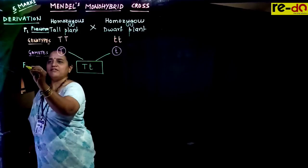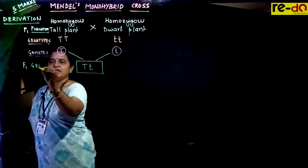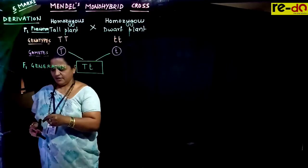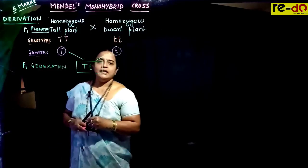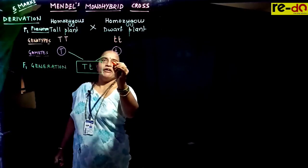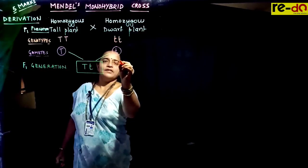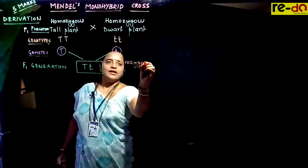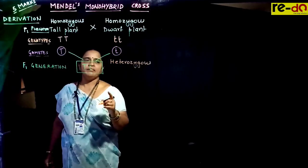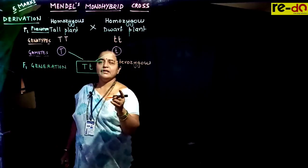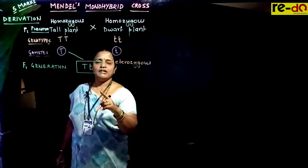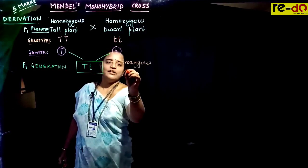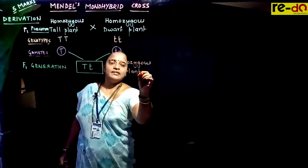This is called the first filial generation, written as F1 generation. Mendel observed that all F1 plants were tall. He verified that the F1 plant is a hybrid carrying capital T for tallness and small t for dwarfness, but the phenotype expressed is tallness. So all F1 plants are tall plants.